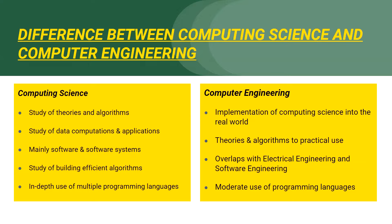Whereas computer engineering makes it possible for computing science to be implemented in the real world. It takes the theoretical components of computing science and algorithms to make practical use. This field usually overlaps with electrical engineering and software engineering to design and develop technological systems.